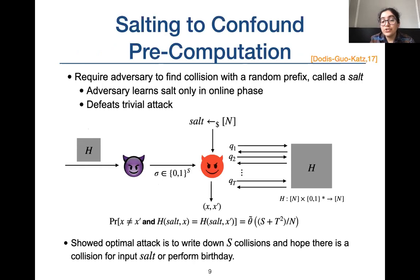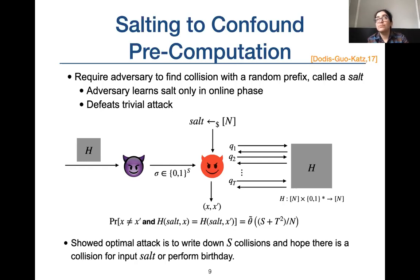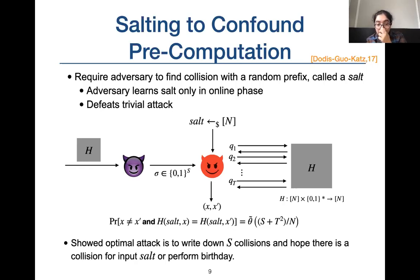To make the problem meaningful, we study collision finding with pre-computation on salted hash functions. Salted hash functions take an additional input called the salt. The attacker is given h in the pre-computation phase and learns the salt only in the online phase. Dodis, Guo, and Katz found that the probability of finding collisions for such an attacker is at most (s + t²)/n. For small enough s and t, this advantage is less than 1, so salting makes finding collisions harder with pre-computation.